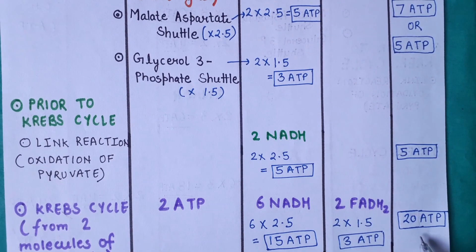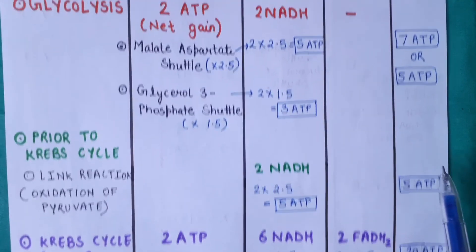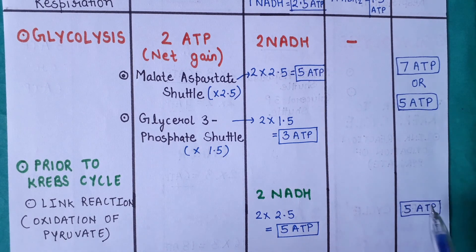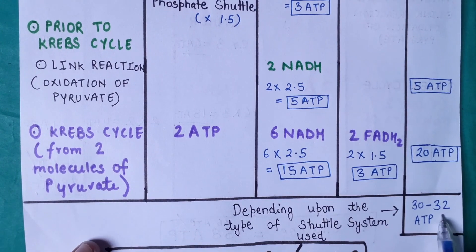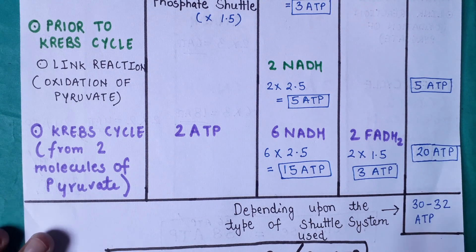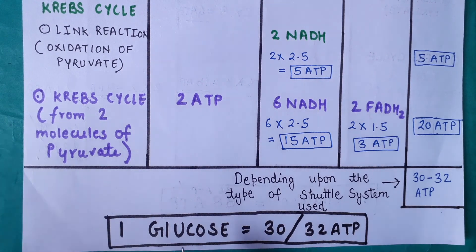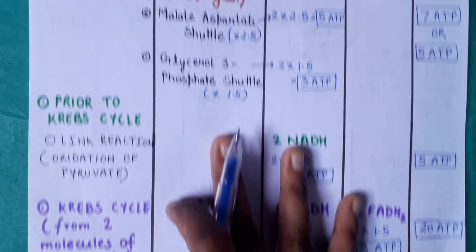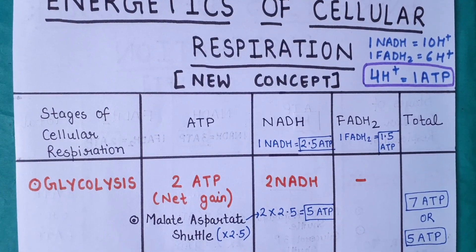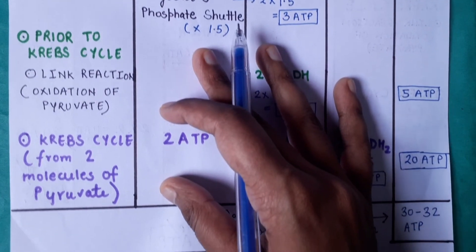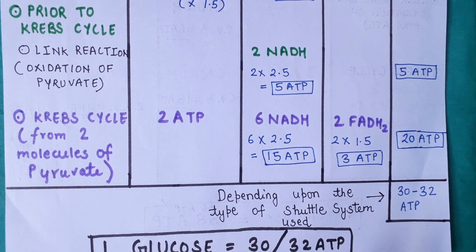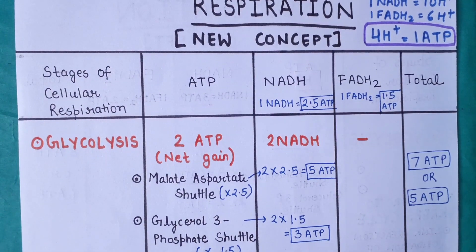Adding all values: 20 ATP from Krebs cycle plus 5 ATP from pyruvate oxidation is 25 ATP, plus either 7 or 5 ATP from glycolysis, giving a net gain of either 32 ATP or 30 ATP depending on the shuttle system used. According to the new and latest concept, one molecule of glucose gives either 30 or 32 ATP — this is the updated concept not yet in most textbooks.